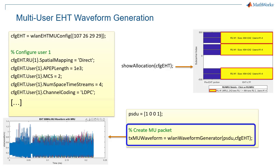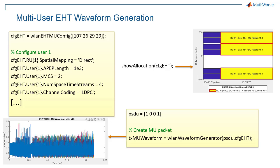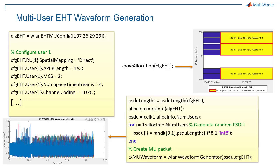Once the setup is complete, you can simply invoke the Wireless LAN waveform generator, which puts everything together. If you want, you can generate specific payloads for each user and invoke the waveform generator in the exact same way.